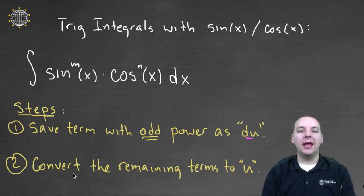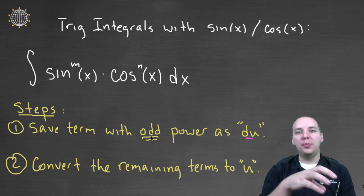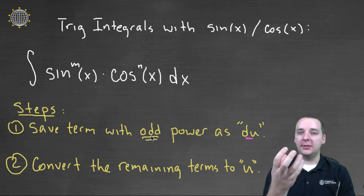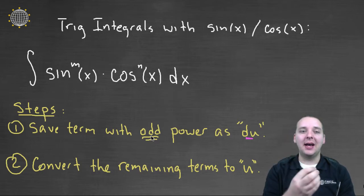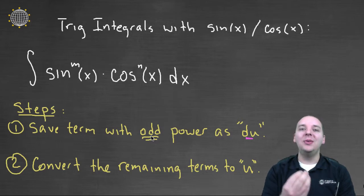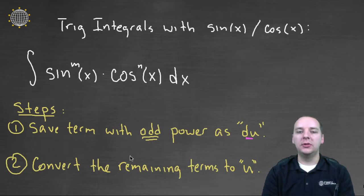Now you might guess why we've chosen an odd power, because if you have sine to the fifth power, if you peel off one of those sines because it's an odd power, then what's left is sine to the fourth. It's an even power, and you can use trig identities to turn those into cosines. So these are the two steps: save the term with an odd power as the du, and convert everybody who's remaining into u's.